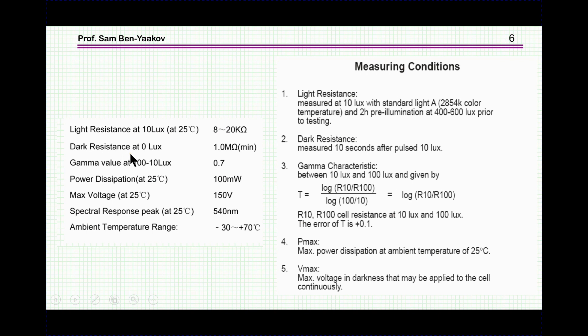Dark resistance with no light is 1 megohm. The gamma, gamma is the slope that we just talked about, it's 0.7. And the power dissipation, very important, that is how much the unit can dissipate when you pass current through it, it's in the range of 10 milliwatt.